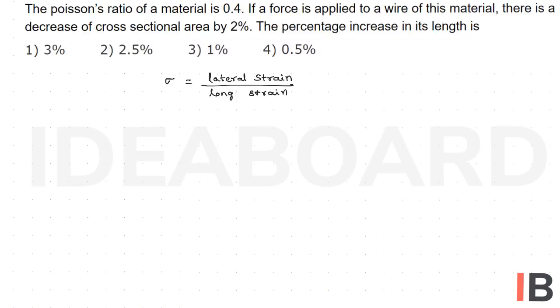Let us write here: sigma equals minus delta R by R, divided by delta L by L. Now taking delta L by L, which equals minus delta R by R, divided by sigma.